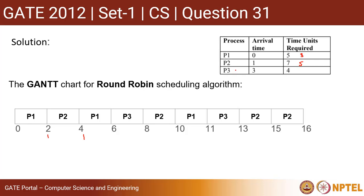By that time P3 is already there. P3 joins at time three. P2 has come back after doing two quantum and is at the front of the waiting queue, so P1 captures the CPU first and executes for two more quantum, leaving P1 with one quantum. Then P3 executes two quantum, leaving P3 with two quantum. Then P2 executes two quantum, leaving P2 with three quantum. Then P1 comes back and executes its last one quantum.